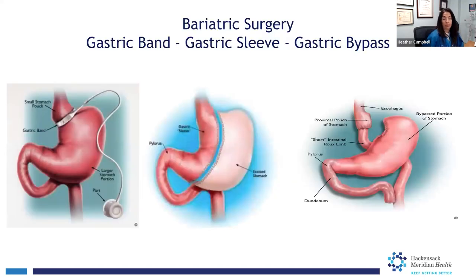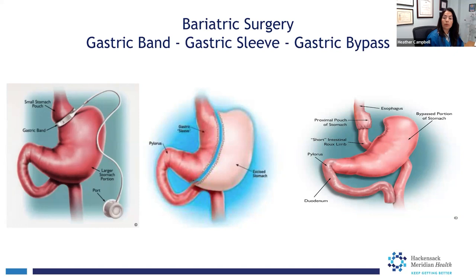Let's talk about surgical weight loss. Several options exist: gastric band, gastric sleeve, and the gastric bypass. The gastric band works by taking elastic tubing, wrapping it around the upper portion of the stomach, creating a small stomach pouch above it. That band is then connected via tubing to a fill port.